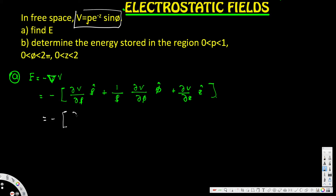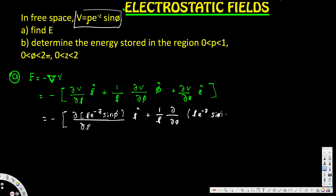Now we plug in V = ρe^(-z)sinφ. We take minus the partial derivative of V with respect to ρ in the ρ direction, plus one over ρ times the partial derivative of V = ρe^(-z)sinφ with respect to φ in the φ direction, and lastly the partial derivative of V = ρe^(-z)sinφ with respect to z in the z direction.